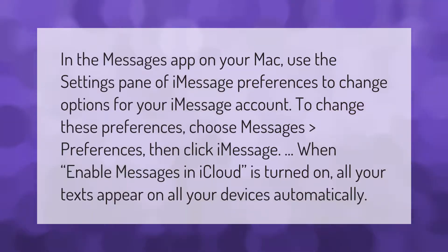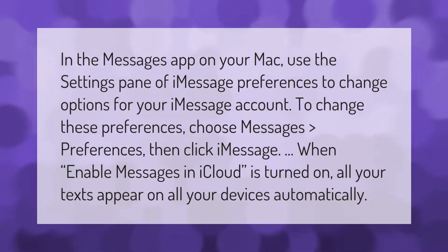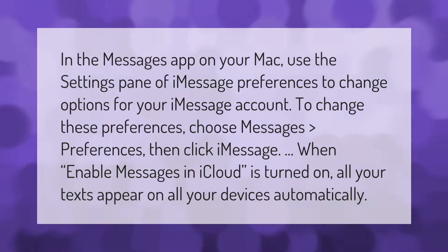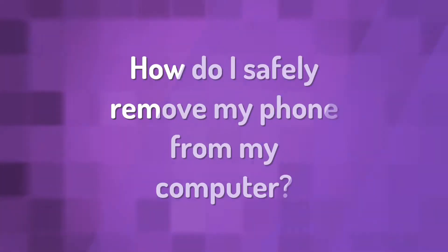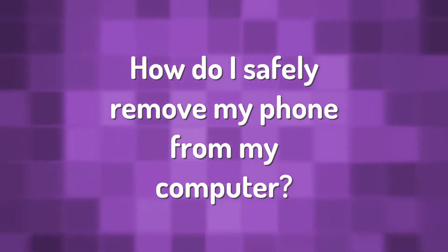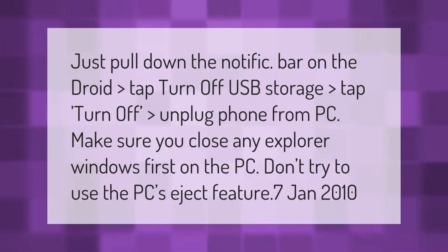In the Messages app on your Mac, use the Settings pane of iMessage Preferences to change options for your iMessage account. To change these preferences, choose Messages > Preferences, then click iMessage. When 'Enable Messages in iCloud' is turned on, all your texts appear on all your devices automatically.